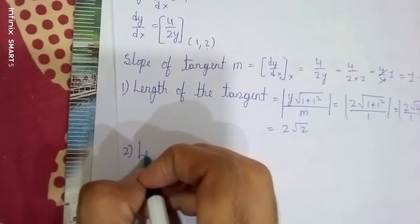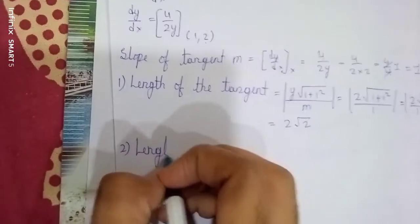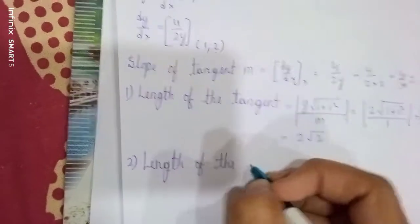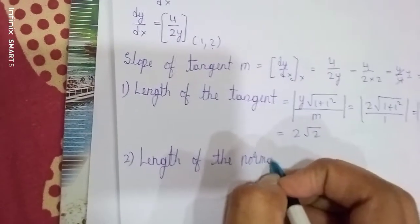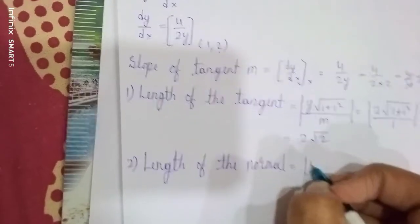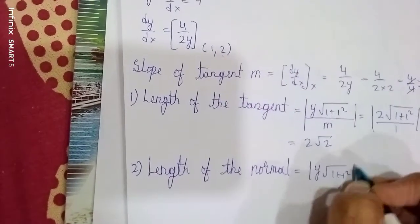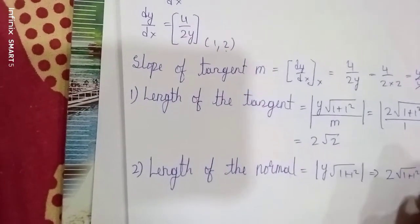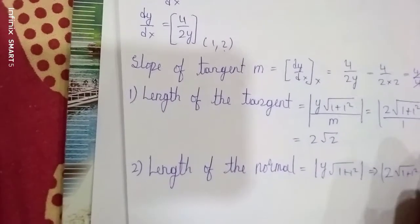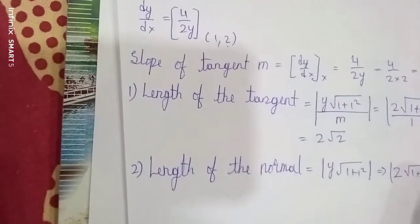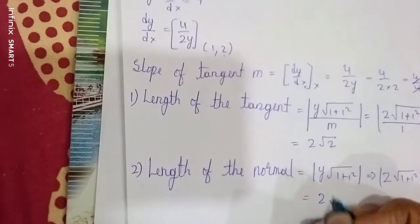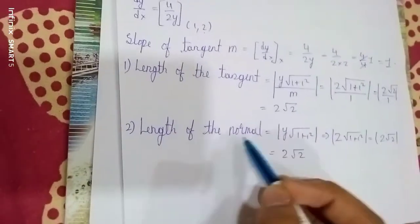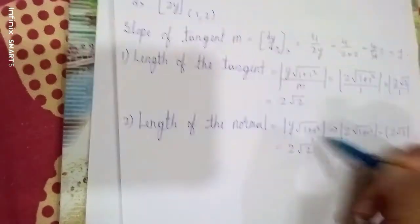Length of the normal, formula = |y|√(1 + m²) = 2√2. Length of the tangent is equal to the length of the normal. Both the answers should come same.